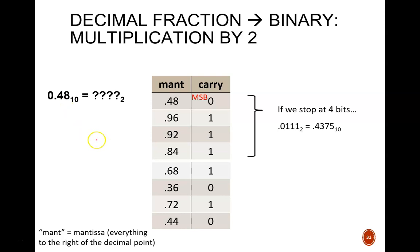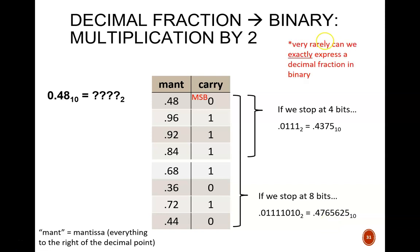So, let's continue. 0.84 times 2 gives 1.68. 0.68 times 2 gives 1.36. 0.36 times 2 gives 0.72. And so on to the end of this table. Now, let's check how close we've come. Reading from top to bottom, I have a binary value of 0.01111010. In decimal, that is 0.4765625. We are very close now, but still not exactly to 0.48.